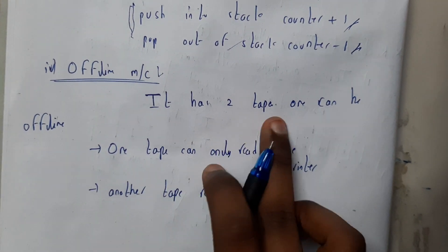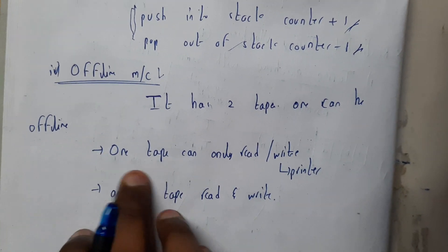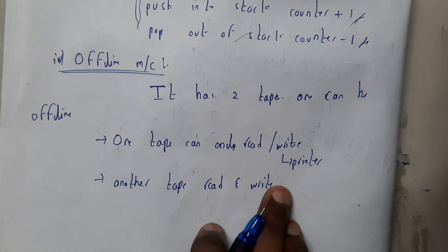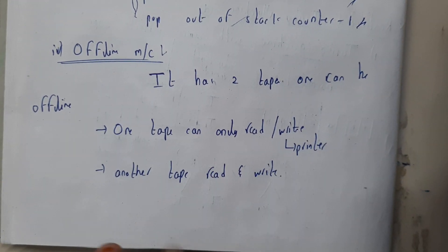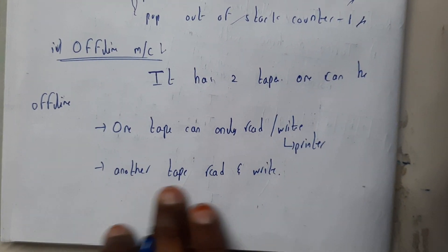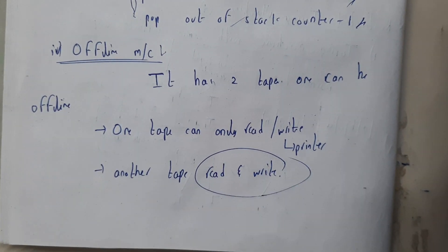Offline machine has two tapes. One tape can read or write - it can do only a single operation, that is nothing but a printer. The other tape we can read and write, updating values and inserting - it's like a queue or a list.